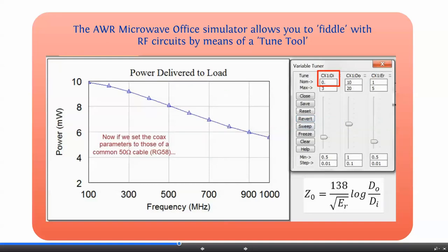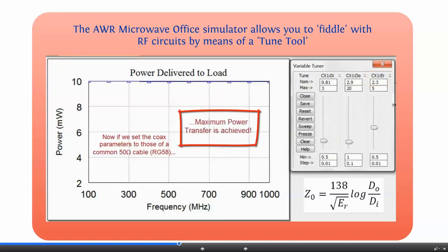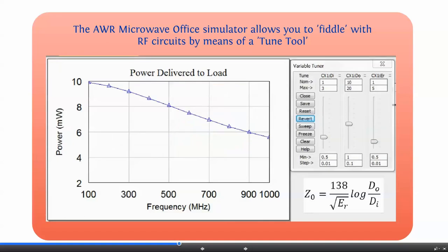We can now set the values of DI, DO and εR to those of a typical 50 ohm cable, the RG58. And this will give us an impedance of 50 ohm for the cable which will ensure the maximum power transfer. Now you can see that there is an equation at the bottom right-hand corner of the slide which tells you exactly how the characteristic impedance of a coaxial cable changes. This equation, of course, has got a physical meaning which we don't have time to explain. However, there is a reference in the references of the paper which will direct you to a video on coaxial cables and in that video things are explained very thoroughly from a physical point of view.